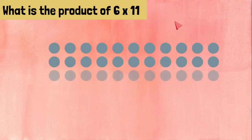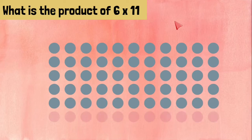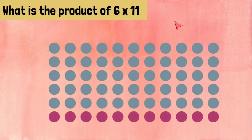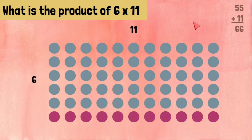6 times 11 means 6 rows of 11. We can take 55 that we knew from 5 times 11 and add 11 more, which gives us 66. 6 times 11 equals 66.